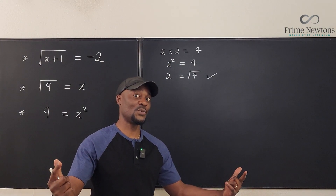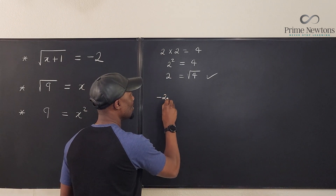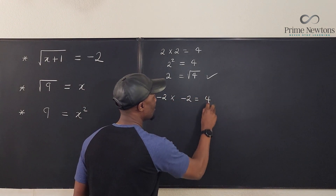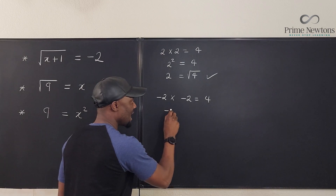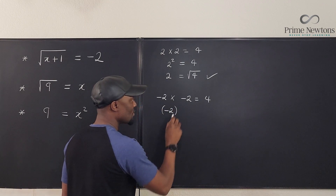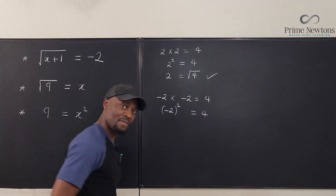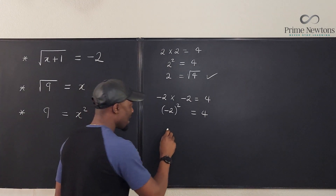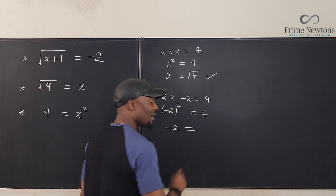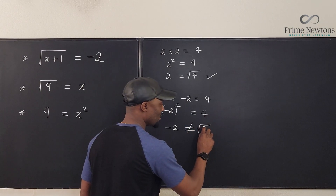Now let's do it again: negative two times negative two is equal to four. I can write it as negative two squared equals four. However, I can also write that negative two is NOT equal to the square root of four.